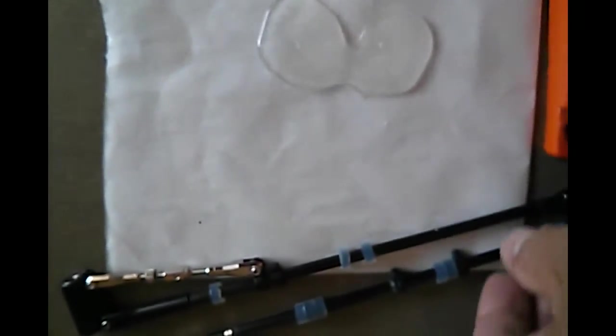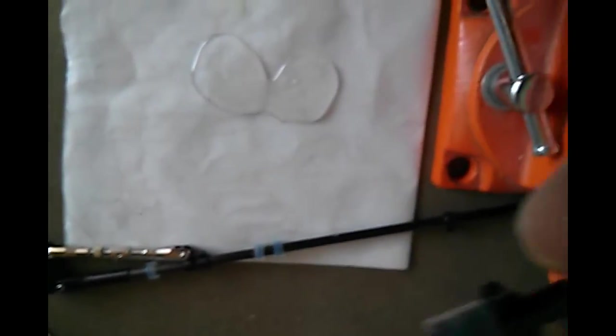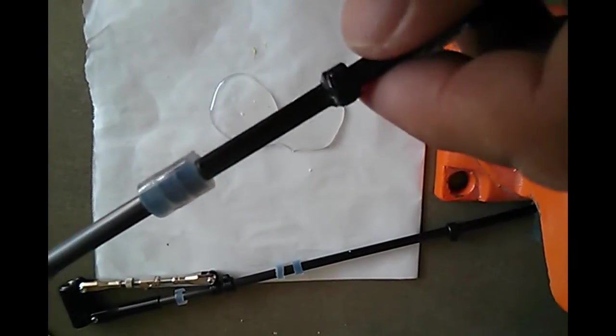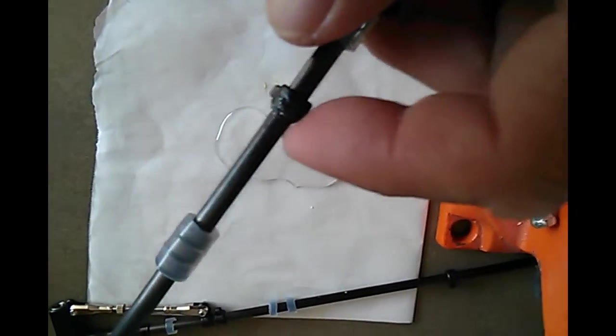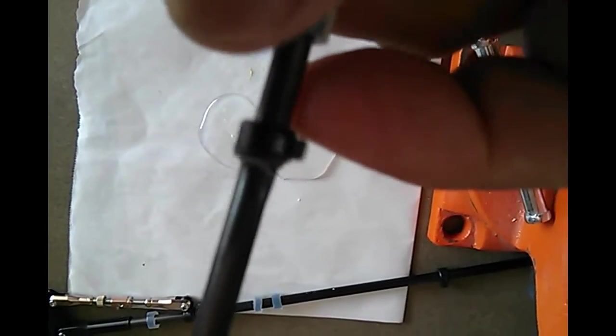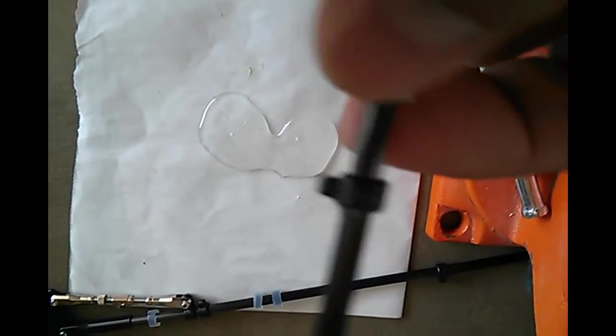Okay, I'm just going to work on the jib boom and the main boom. There's a few points on here that need to be strengthened. So I'm just going to mix up some 30-minute epoxy right there. We're just going to coat a little bit on the edges here just to secure it and it doesn't come loose.